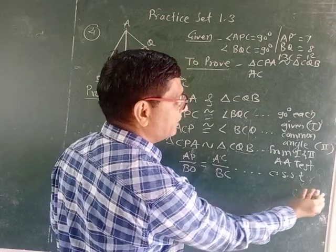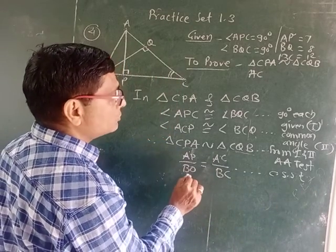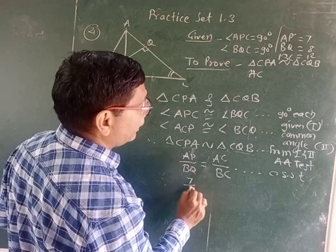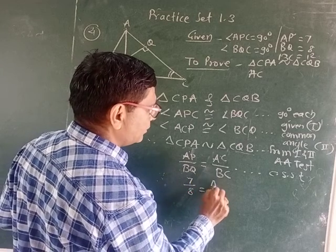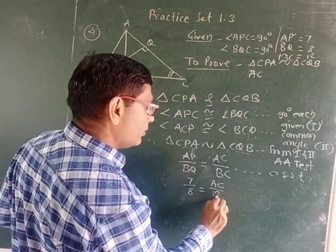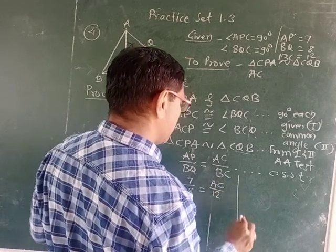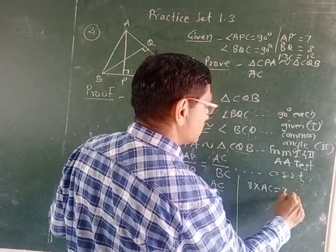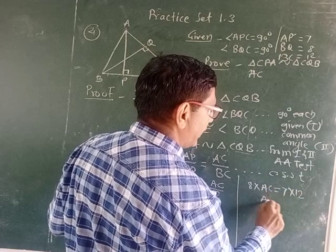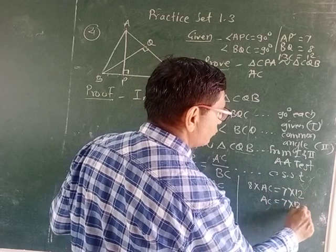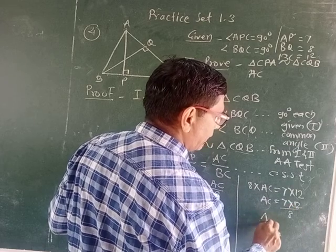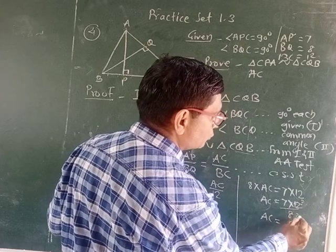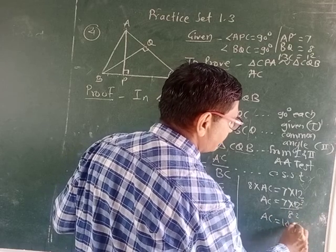Now put the values: AP = 7, BQ = 8, AC we do not know, and BC = 12. Therefore, 8 × AC = 7 × 12. So AC = (7 × 12) / 8 = 84/8 = 21/2, that means AC = 10.5.